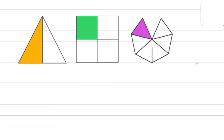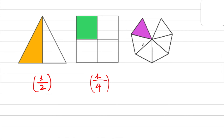Next question — how about this figure with a triangle? You have 2 parts and 1 part shaded, so 1 over 2 is the fractional form for this triangle. And how about this square? You have 4 parts and 1 part shaded, so 1 over 4. And for this one, you have 7 parts, so 1 over 7 is my final answer.